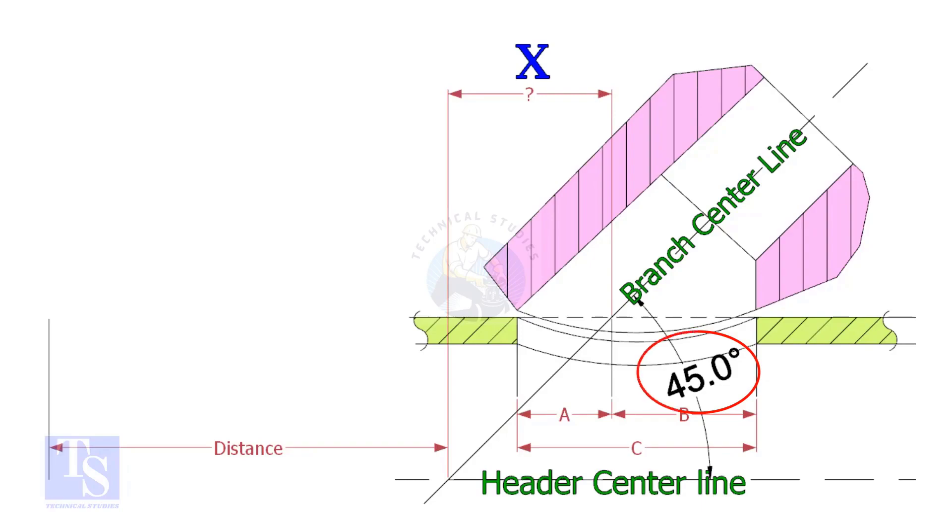If the including angle is 45 degree, the value of x will be always half OD of the header. Suppose the OD of the header is 400mm, then the value of x will be 200mm.